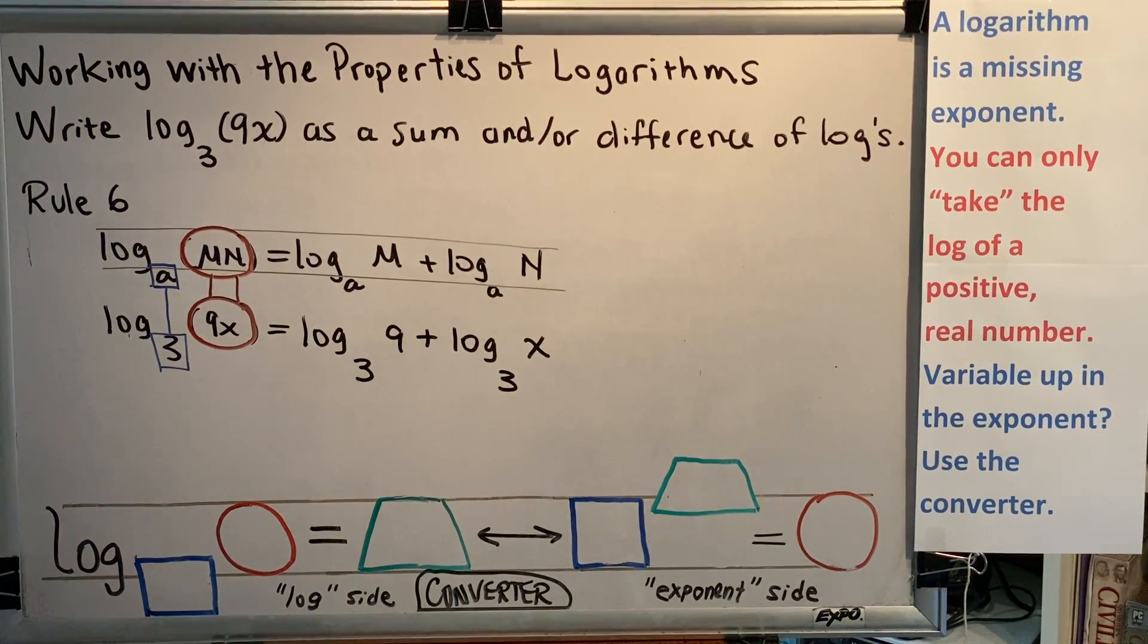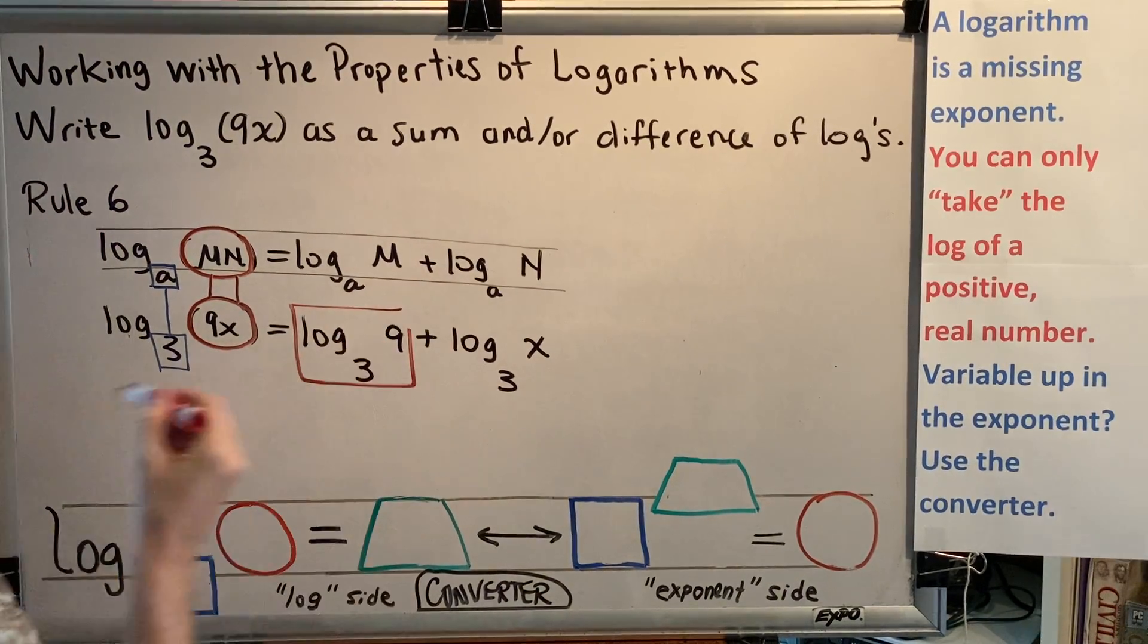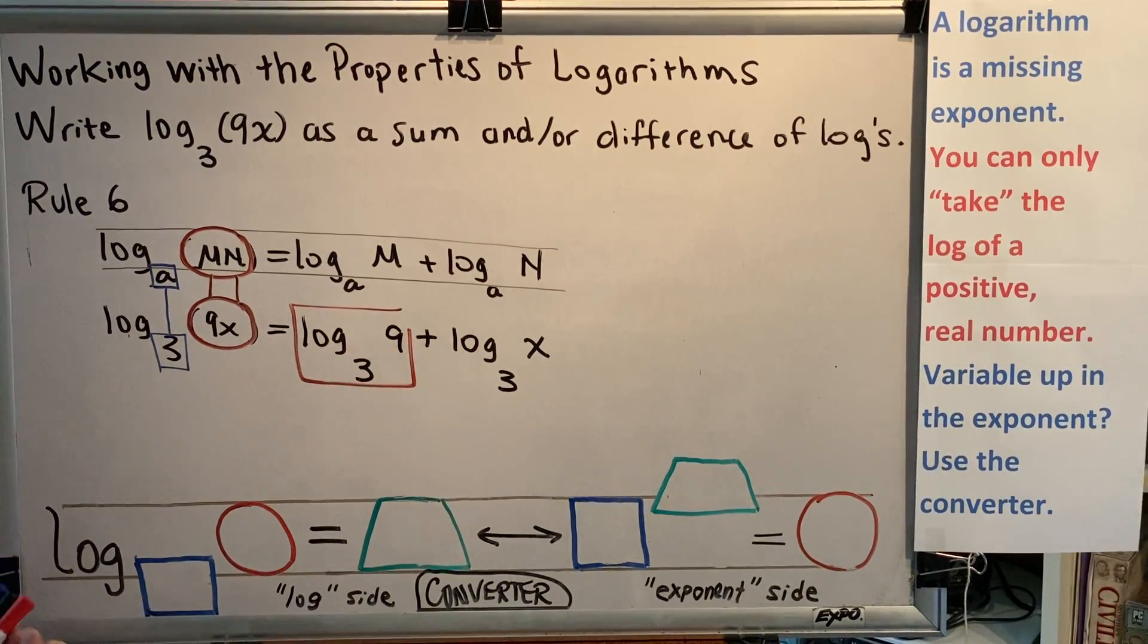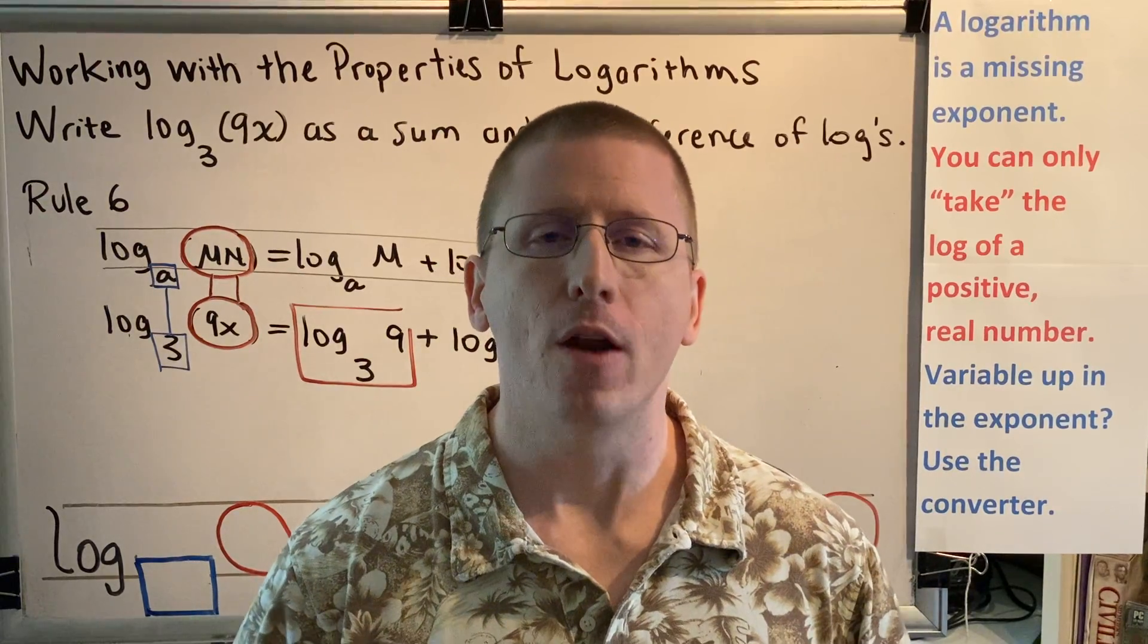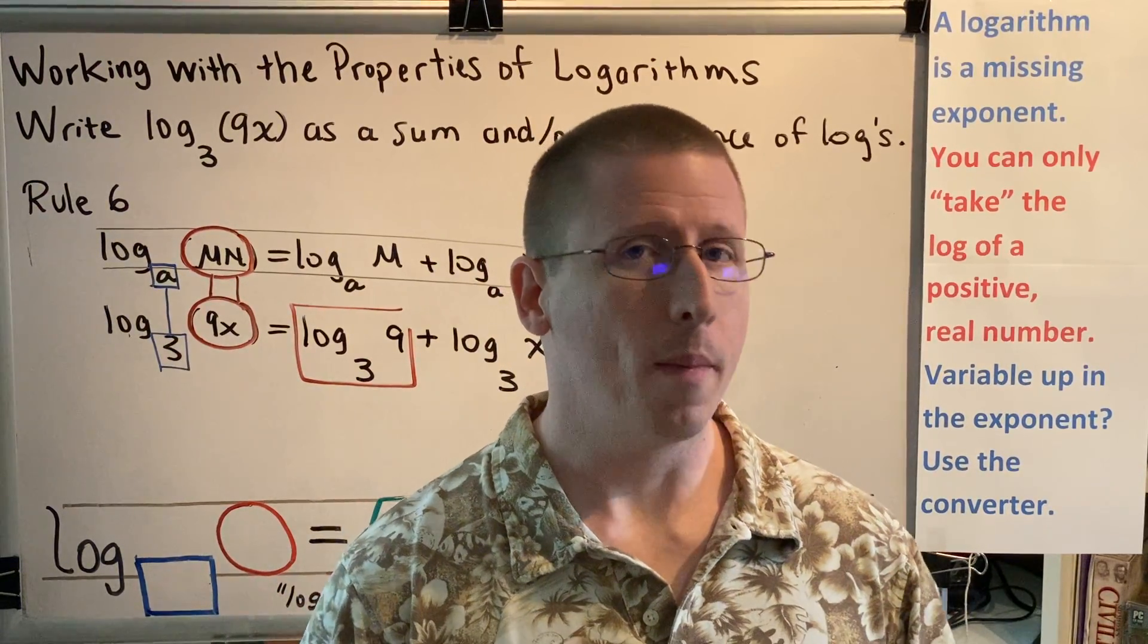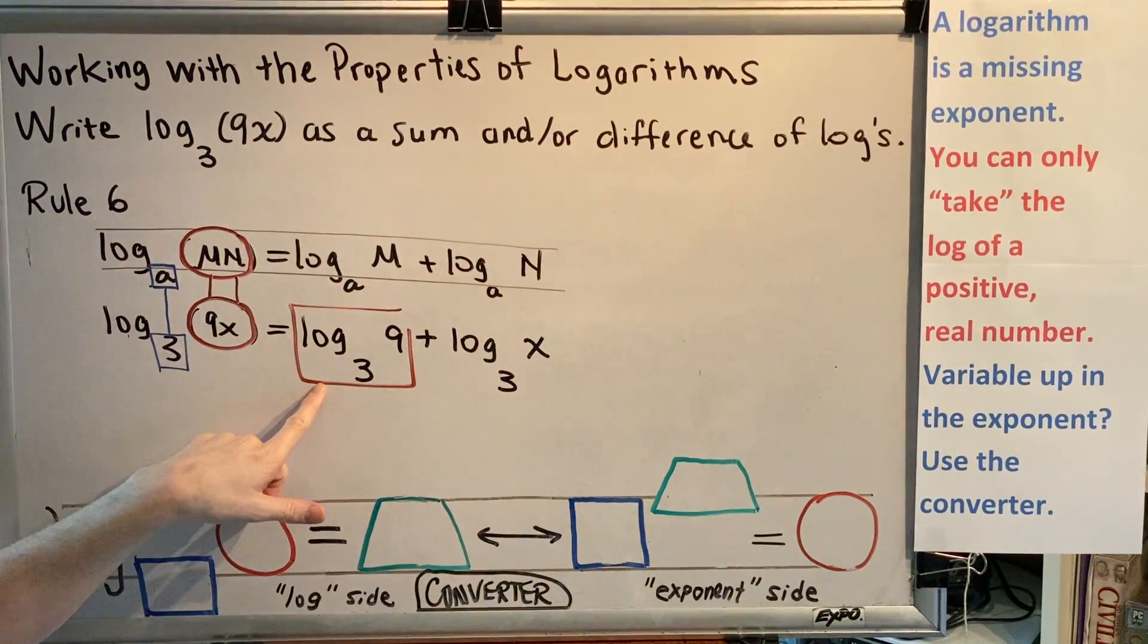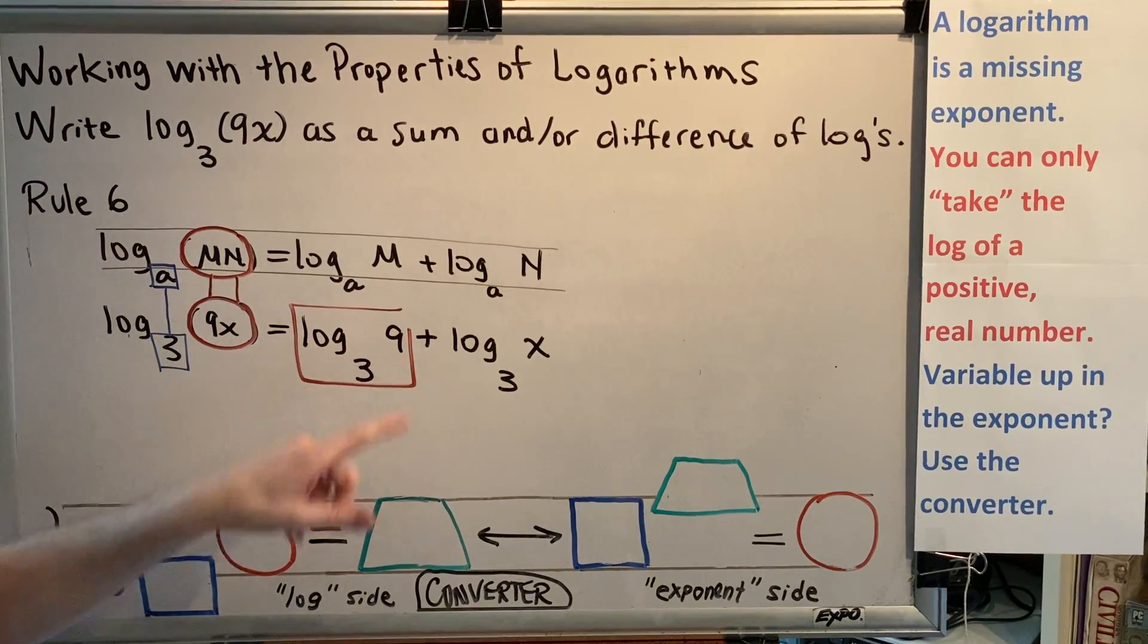Now in a previous video, I taught you something called the brick. The brick is an object that connects the word log with the base and the argument. Whenever you find that the base and the argument are both numbers, you should ask yourself, can that be simplified and rewritten in an easier way? Remember, a logarithm is a missing exponent. So, ask yourself this question. Log is the same as EGOB, E-G-O-B, exponent goes on base. What is the exponent goes on base 3 to make 9?